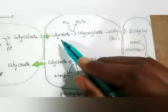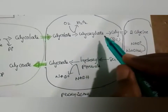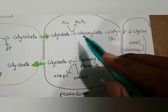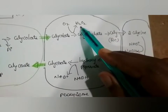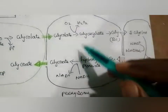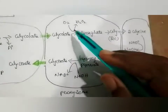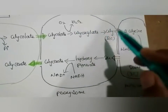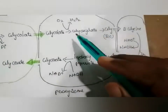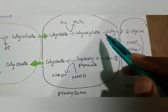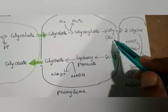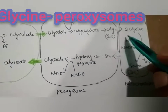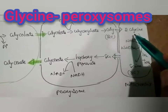Next, glycolate enters into the peroxisomes, where it is converted into glyoxylate. H2O2 is produced here, as oxygenation reactions take place in peroxisomes — which is why they are named peroxisomes. Oxygen is converted into H2O2 in peroxisomes when glycolate is converted into glyoxylate. This glyoxylate is again converted into glycine, which is a two-carbon amino acid compound.